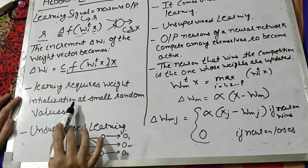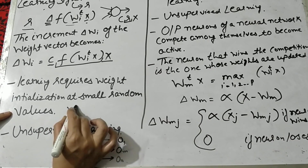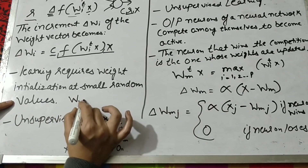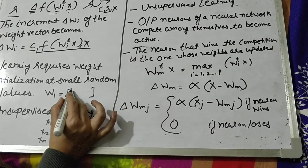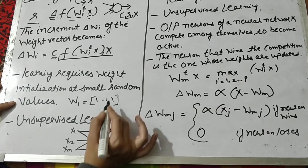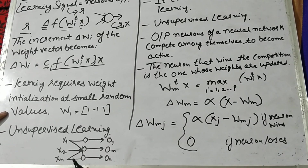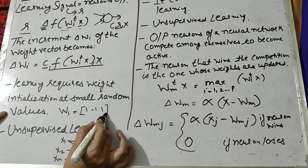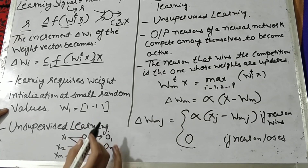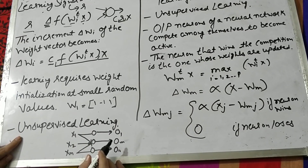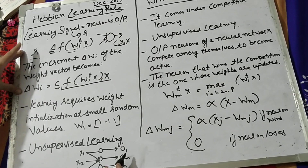The main important point in this case is that learning requires weight initialization at small random values. That means every time you have to start by initializing your weight values with small random numbers as input to the network. Sometimes these values are given to you as part of the problem; otherwise, you can take any number of values, but it is always good to start with small values.